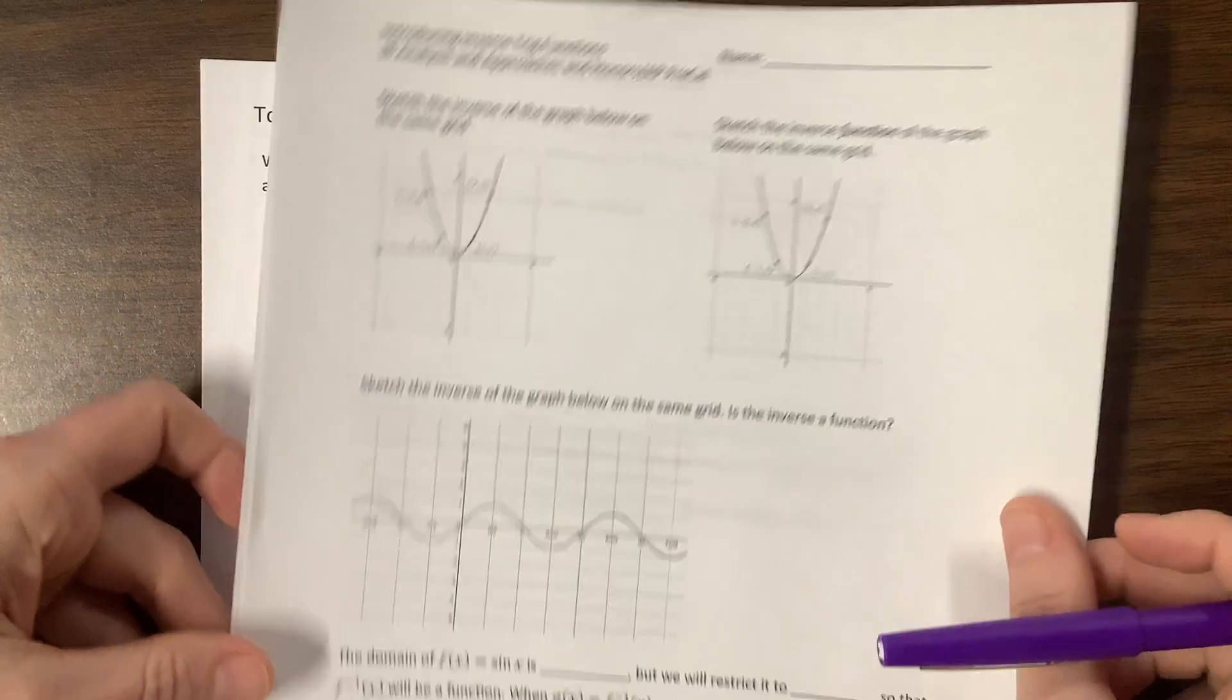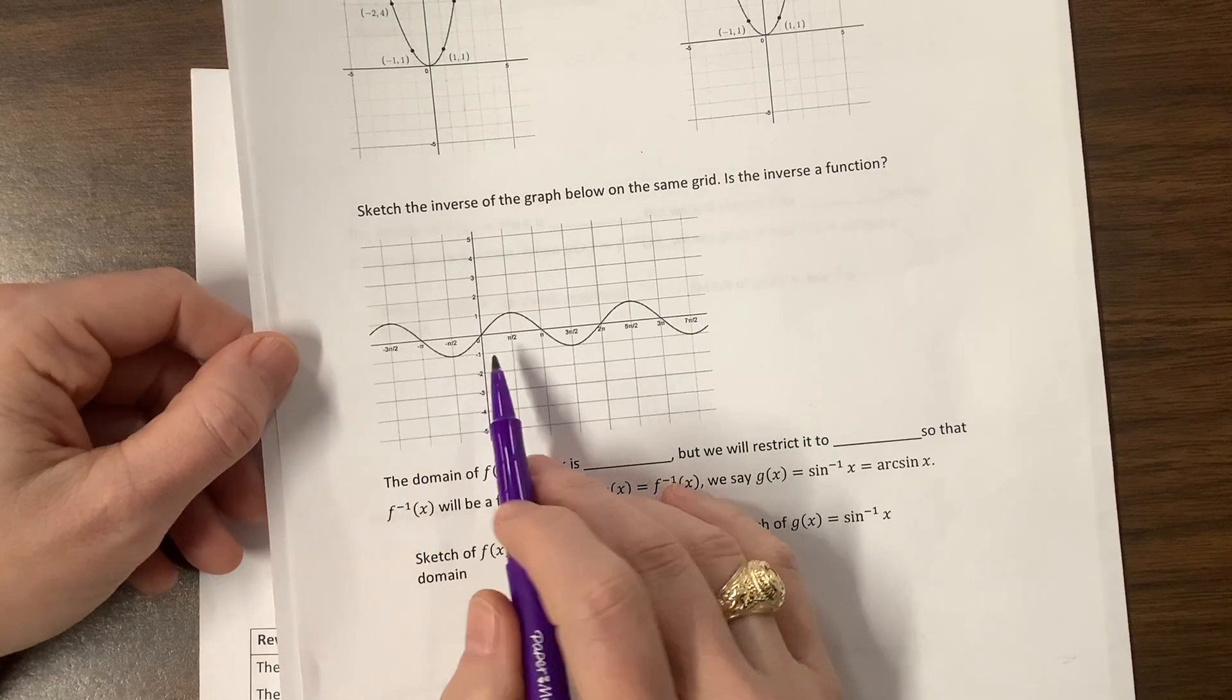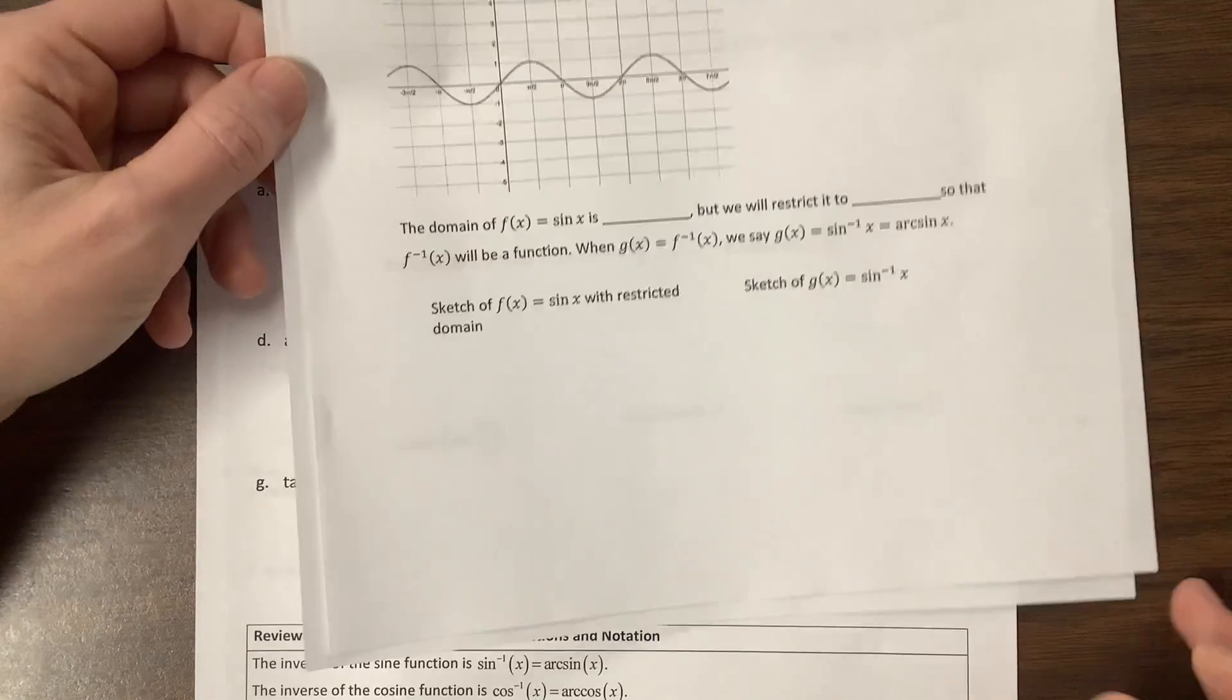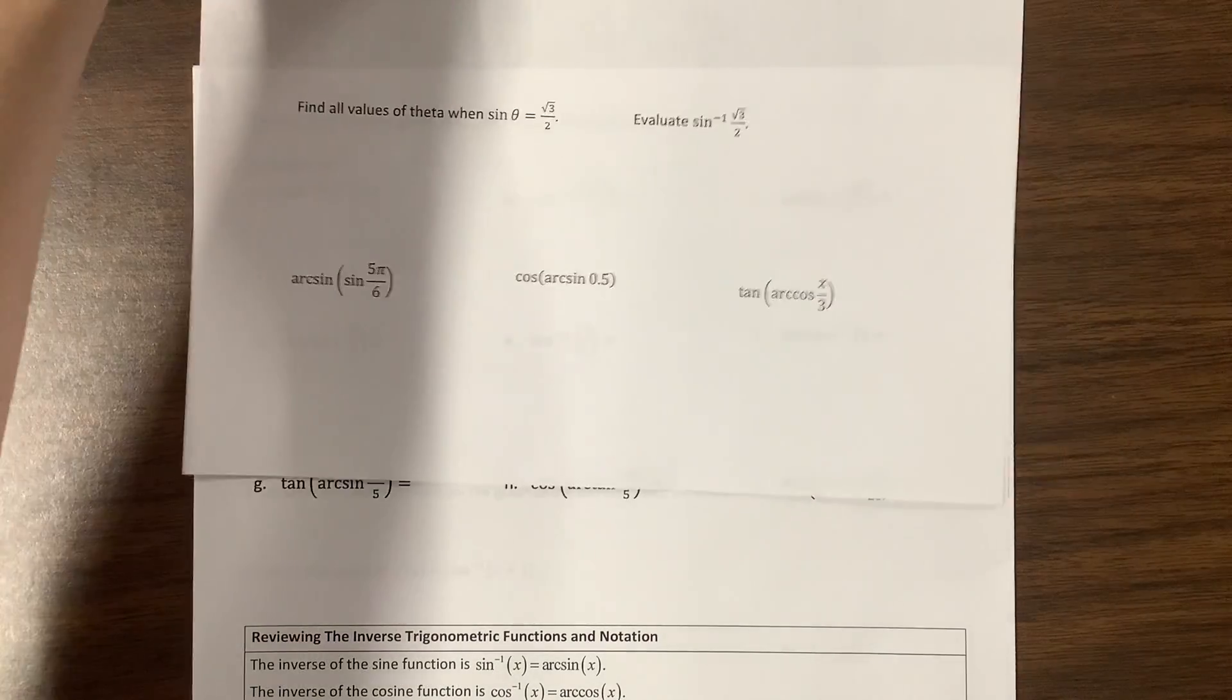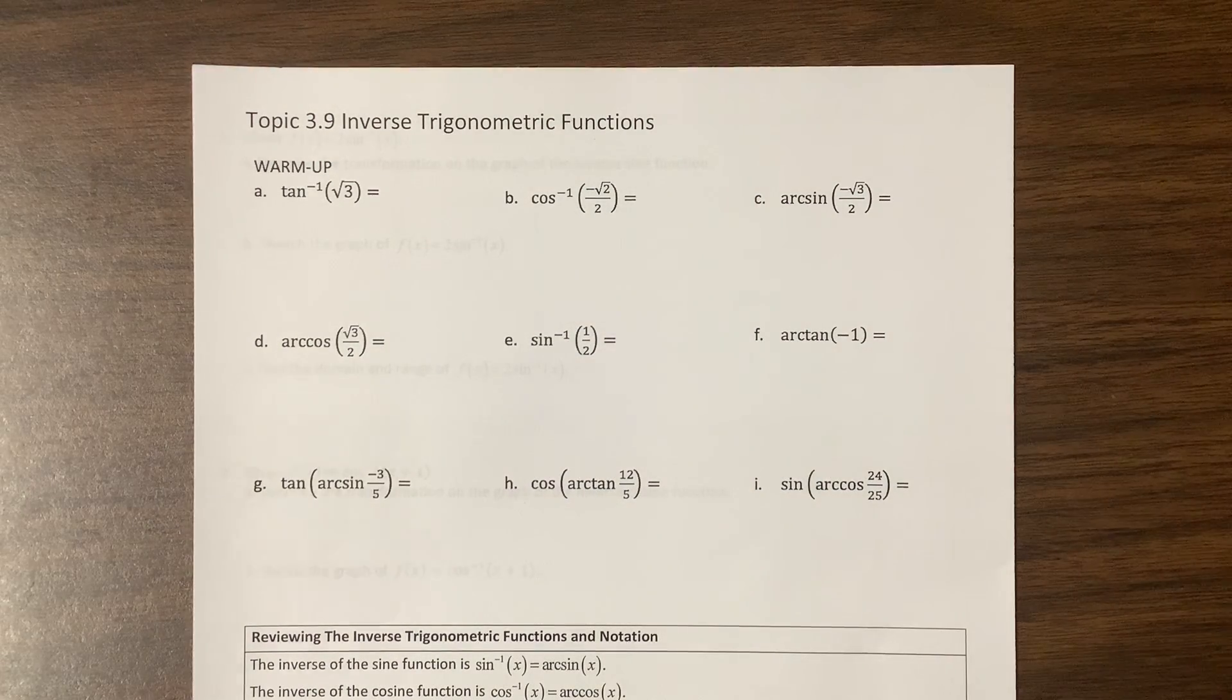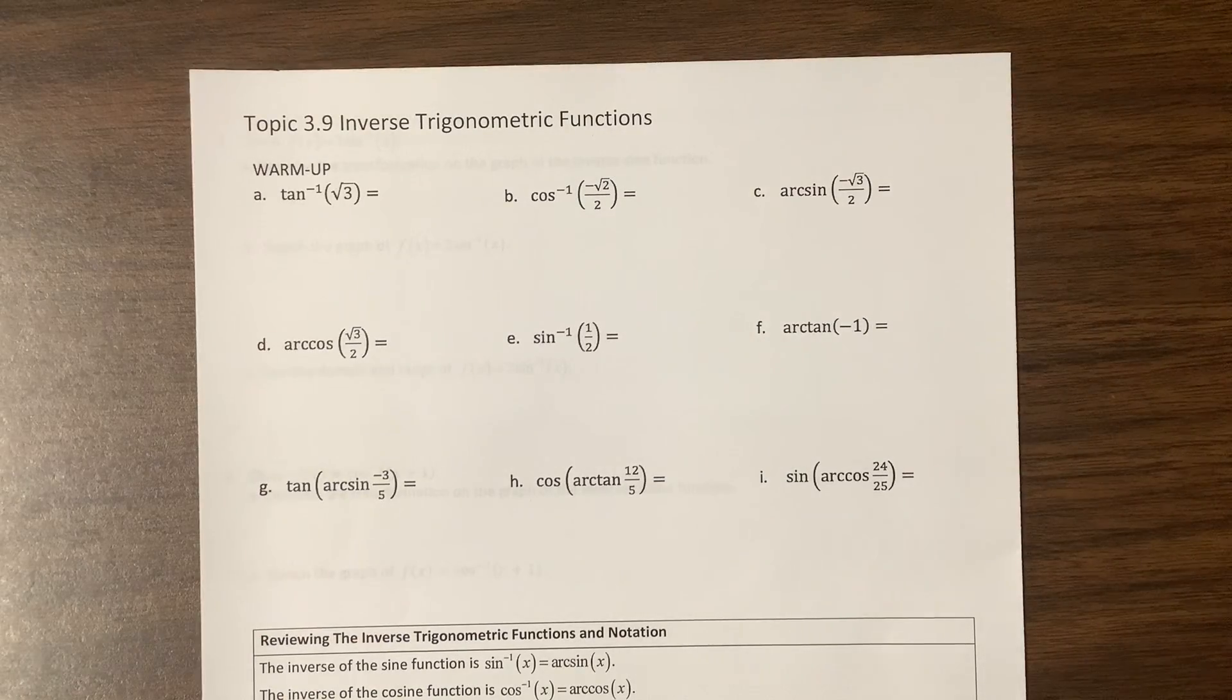So I talk about how we have to restrict the domains. We talk about the difference between the inverse and the inverse function. And then we talk about how if I tried to take the inverse of this whole thing, it wouldn't be a function. Therefore, we have to restrict its domain. So we're going to graph the inverse of sine, the inverse of cosine, the inverse of tangent, and then we practice talking about the difference. Actually, this practice right here leads us straight to this warmup. So I'll try and remember to put a link to that video that I made three years ago that does this worksheet.